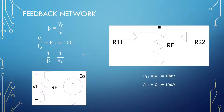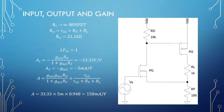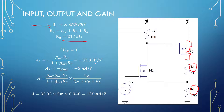The feedback network is the same as the first problem, just with Rf = 100 Ω. So beta = 100, and R11 = R22 = 100 Ω. For the input impedance, since we have a MOSFET gate here, it is infinite. The output impedance is the ro of the MOSFET plus the load plus R22, giving 21.1 kΩ.